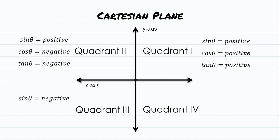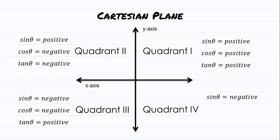For quadrant 3, sine theta is negative, cosine theta is also negative, and tangent theta is positive. For quadrant 3, we only have tangent theta as positive. And lastly, for quadrant 4, sine theta is negative, cosine theta is positive, and tangent theta is negative. So for quadrant 4, the only positive one is cosine theta. We're going to use this to solve for the values of quadrantal angles and special angles.